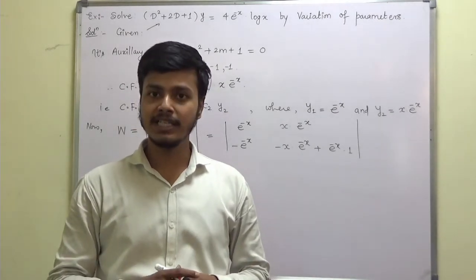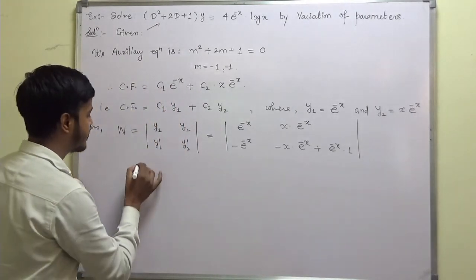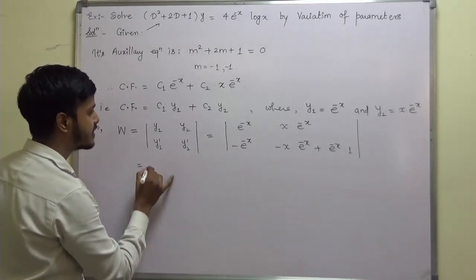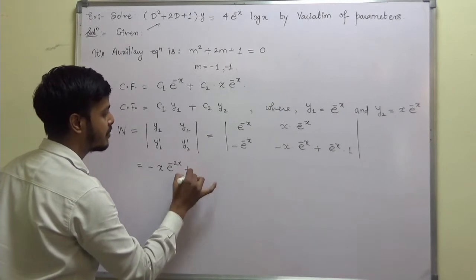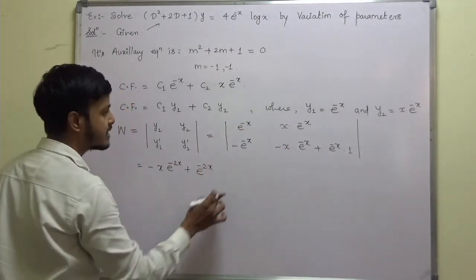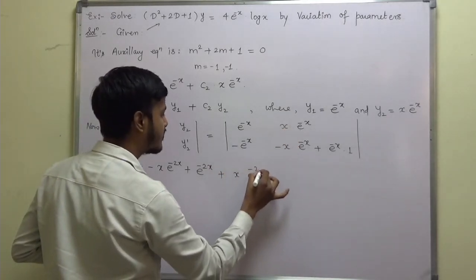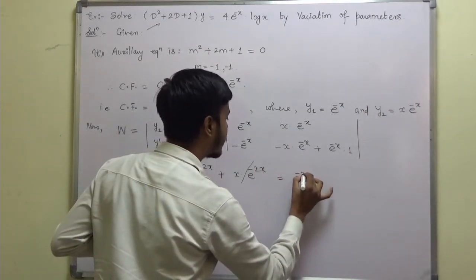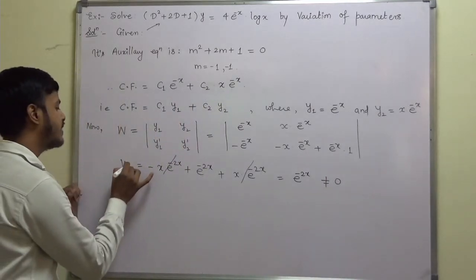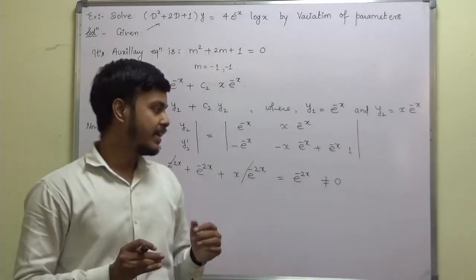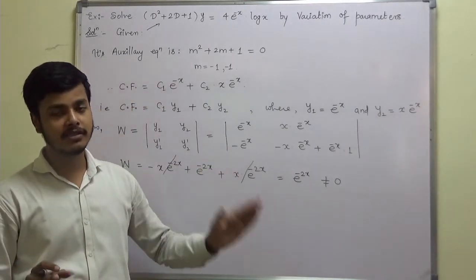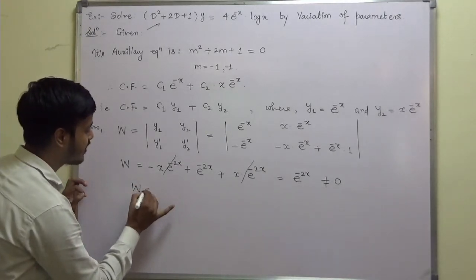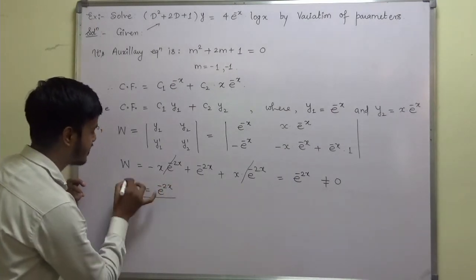So let us check whether your Wronskian is correct. Evaluating the determinant: e^(-x)·(e^(-x) - x·e^(-x)) - x·e^(-x)·(-e^(-x)). This gives -x·e^(-2x) + e^(-2x) + x·e^(-2x). The x·e^(-2x) terms cancel and we remain with W = e^(-2x), which is non-zero. The Wronskian must be non-zero to proceed.